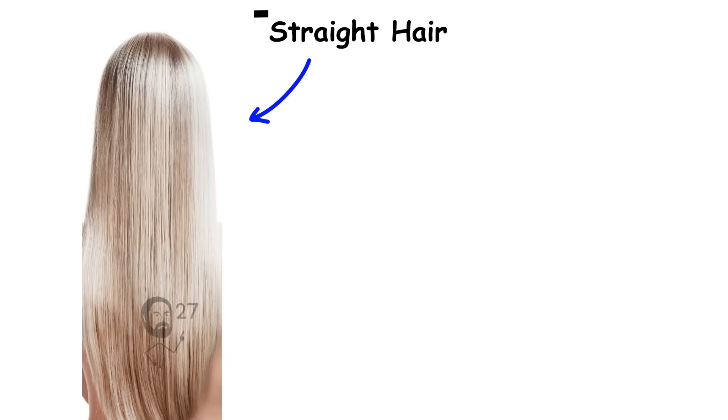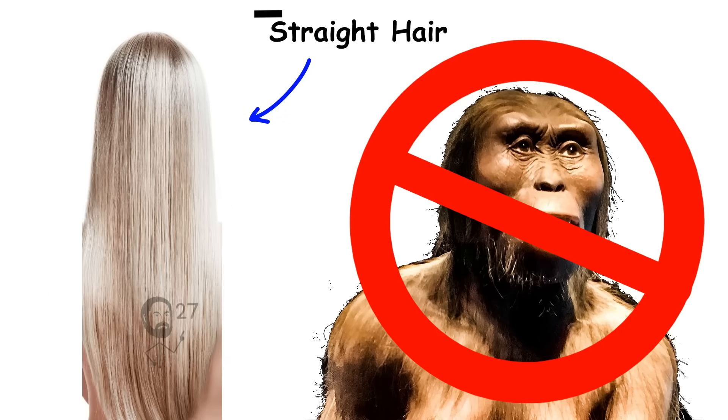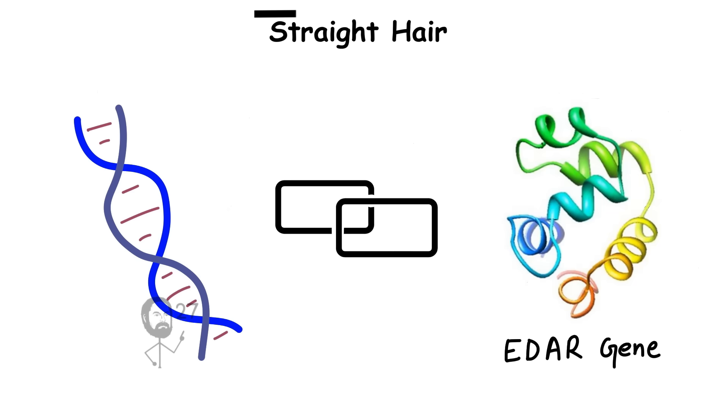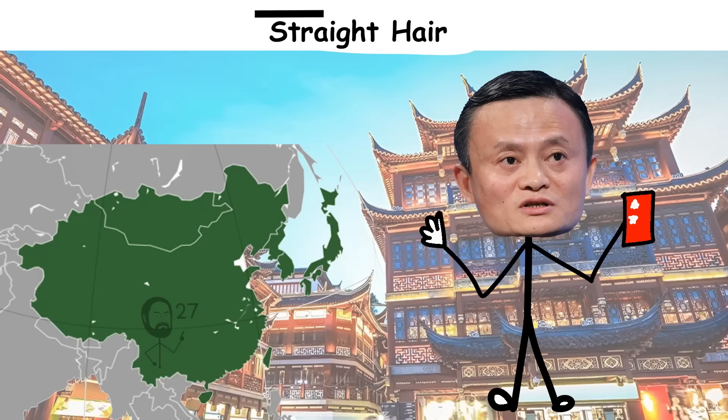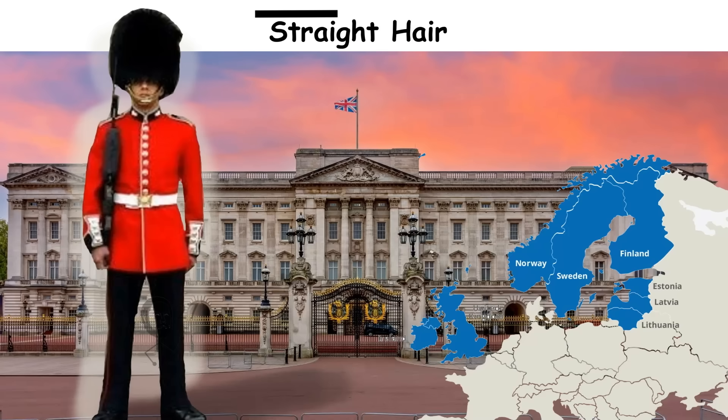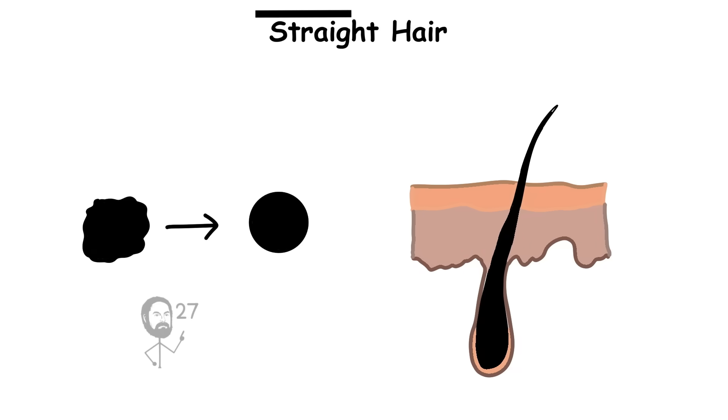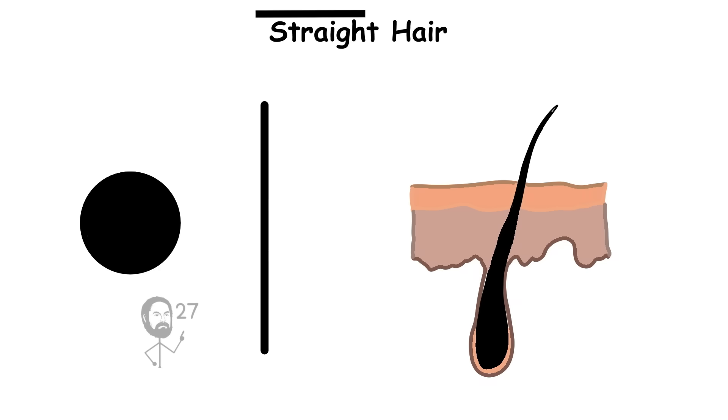Straight hair is not the original human hair type. Genetic evidence links it to a mutation in the EDAR gene, common in East Asian populations and certain Northern European groups, which altered the shape of the hair follicle, producing round, straight strands.